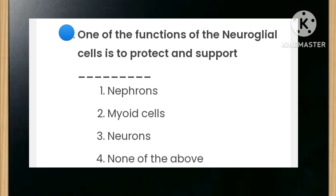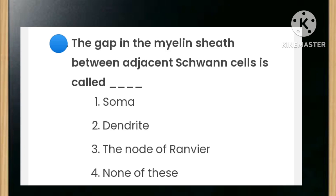One of the functions of neuroglial cells is to protect and support blank — the options are nephrons, myelin cells, neurons, or none of the above. The answer is neurons. The gap in the myelin sheath between adjacent Schwann cells is called: soma, dendrite, node of Ranvier, or none of these? The answer is node of Ranvier.